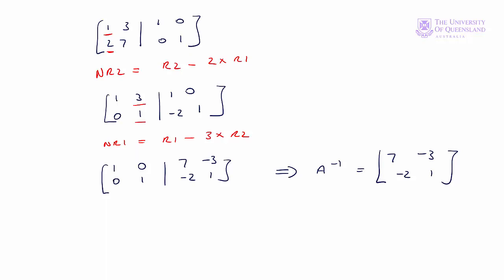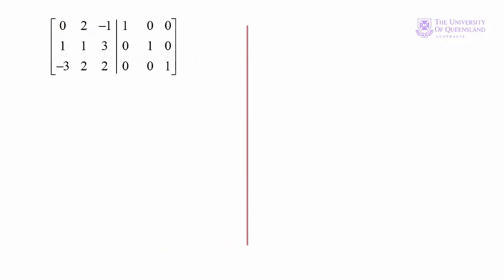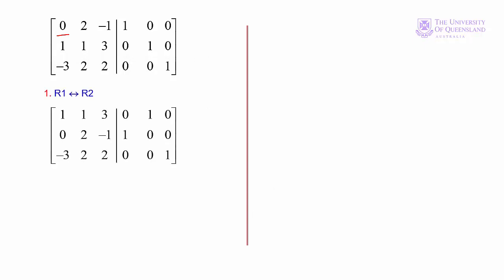Now let's tackle the example from examples 1 and 2. Recall we had a system of three equations. We form the augmented matrix with the matrix of coefficients on the left-hand side and the identity matrix on the right-hand side. To get the inverse of the matrix of coefficients we go through the same steps as in example 2. We want a 1 in the top left-hand corner, so we swap rows 1 and 2.